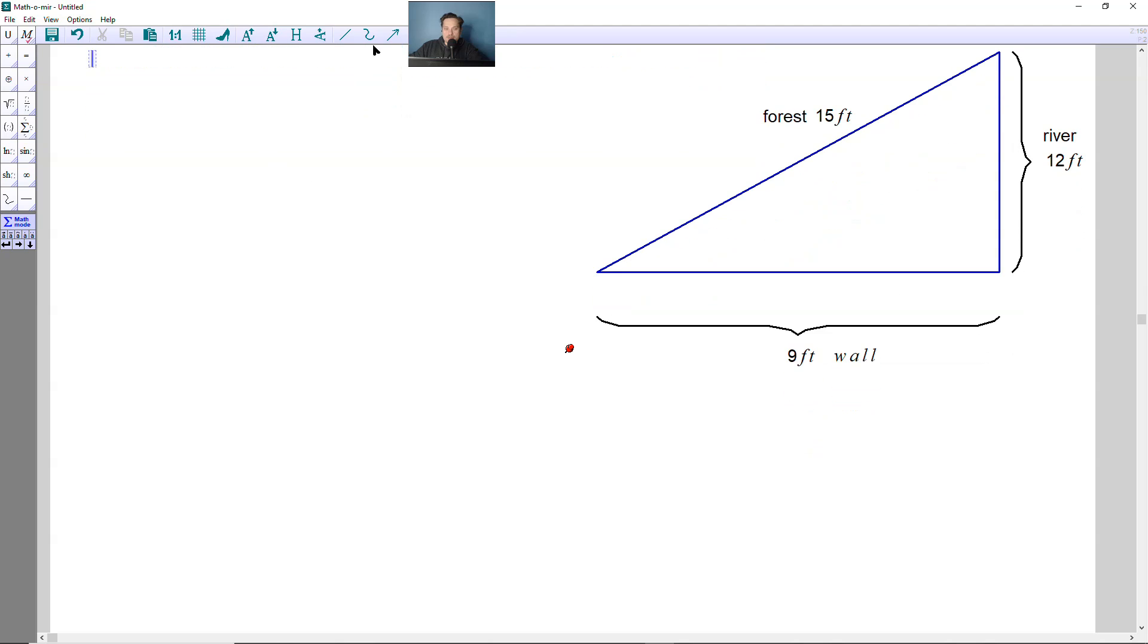So here is your land. What you want to do is somewhere in here put a rectangular enclosure. So maybe the rectangular enclosure will look like this right here. Notice there's a 9-foot wall down below, a river 12 feet this way, and a forest that runs along for 15 feet this way. Somewhere within here you want to put in an enclosure that's as big as possible in terms of its area.